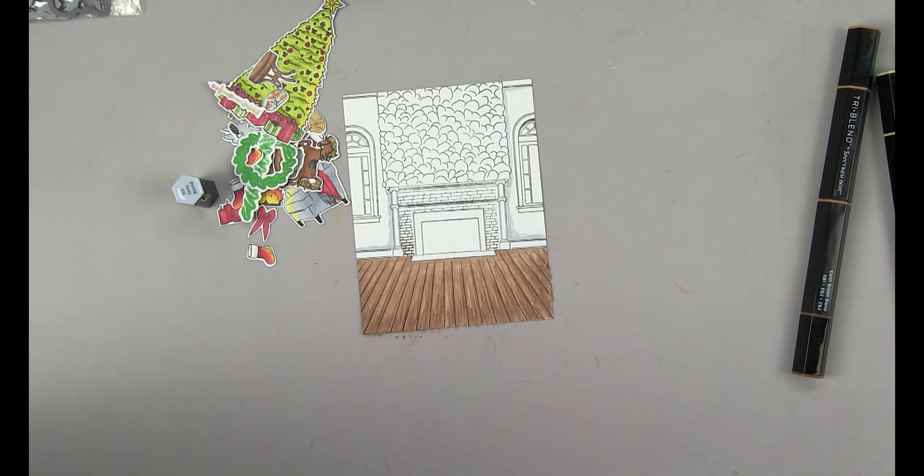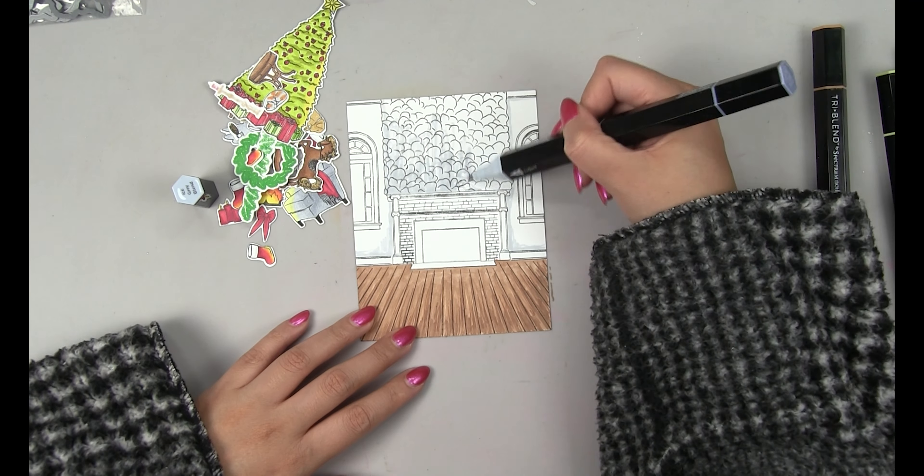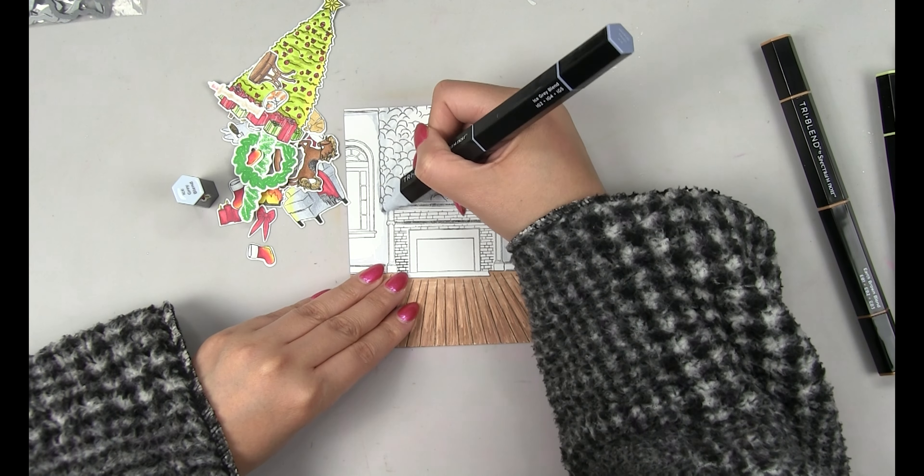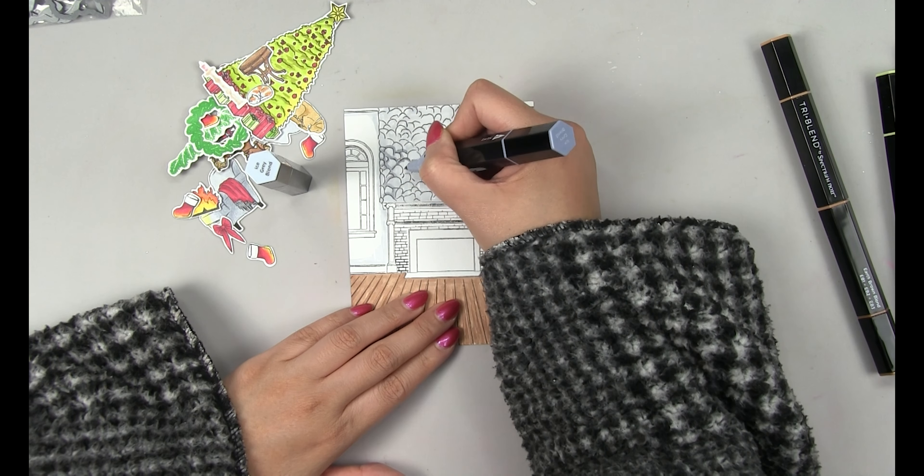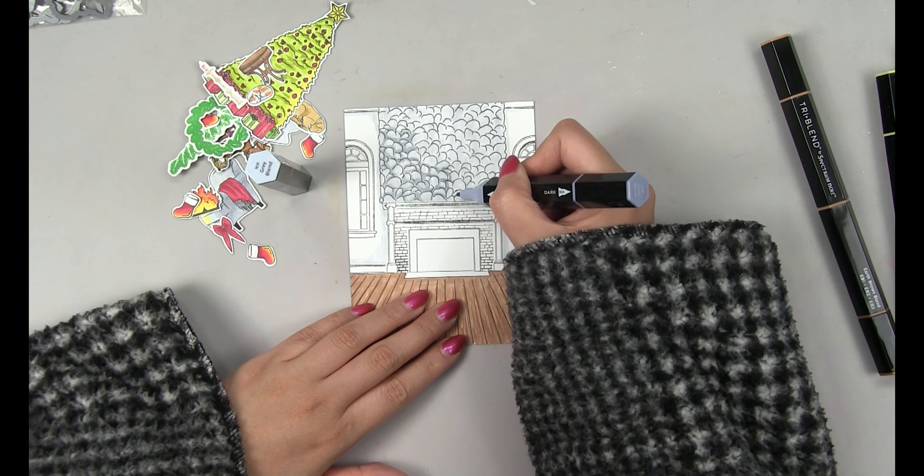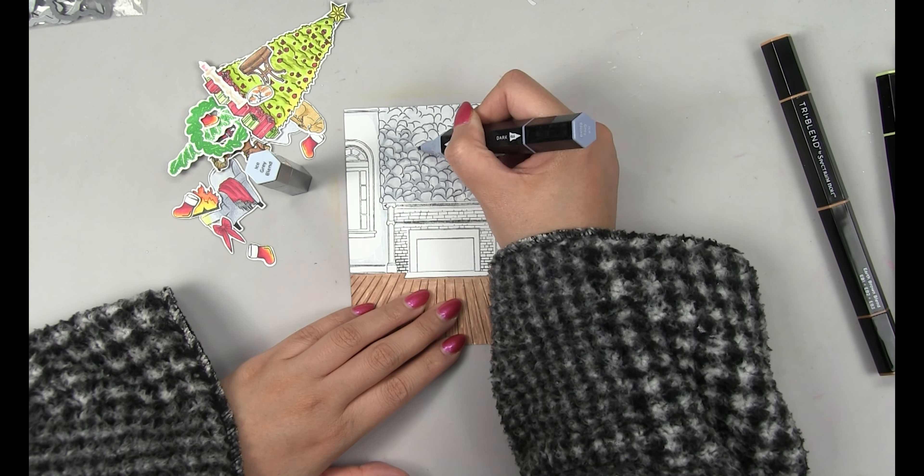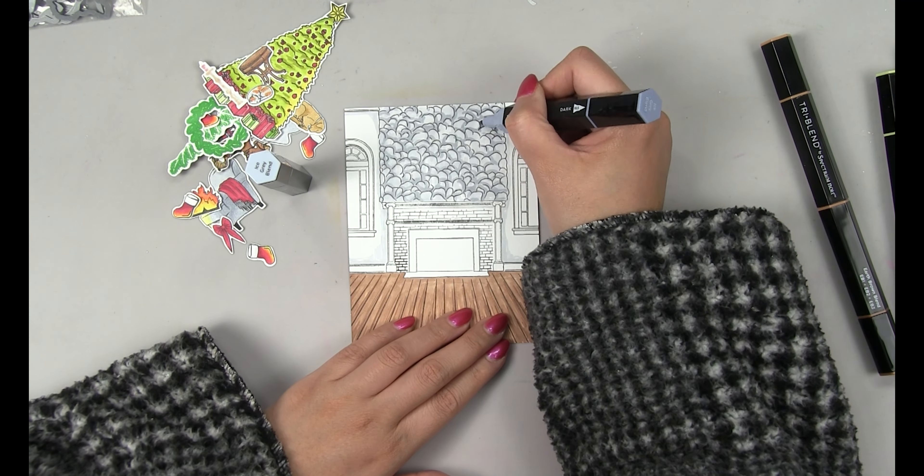Now I'm going to use the light gray marker and just add shading to the walls and the stone wall. I'm going to cover the entire stone wall paneling with the light gray so that's my base color. After I finish with the light gray I'm going to use the mid-tone gray of this marker and I'm going to follow the curves of each stone and just add an outline of the light gray marker to add that shading.